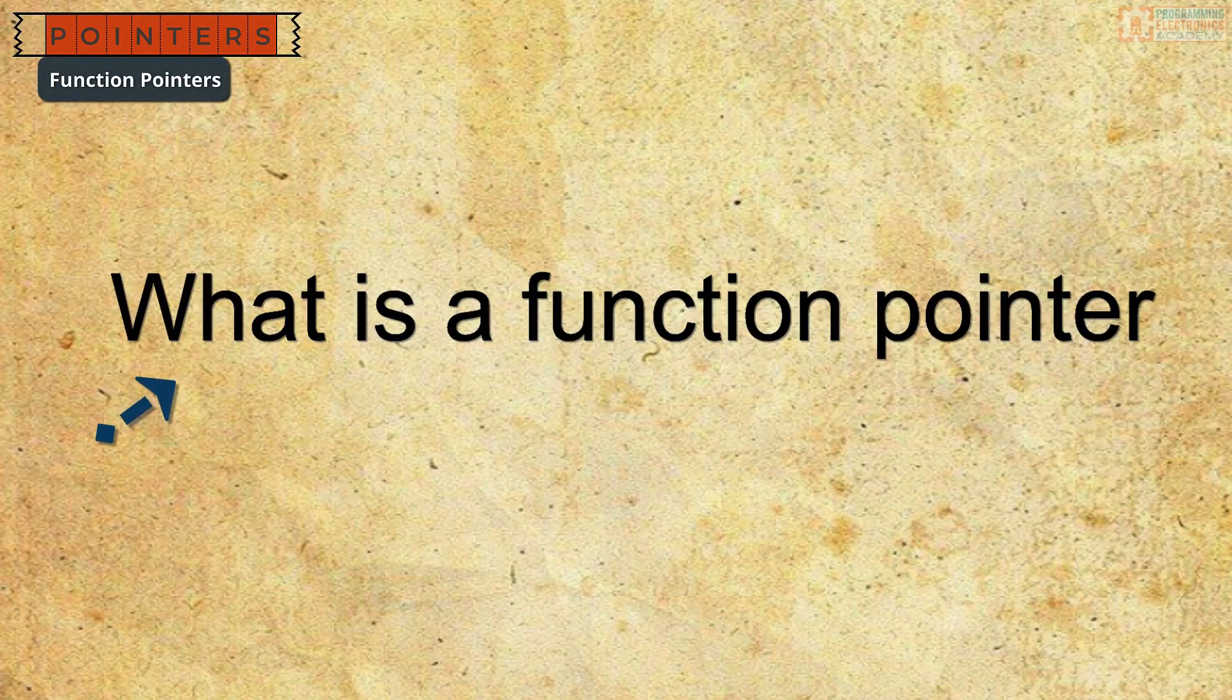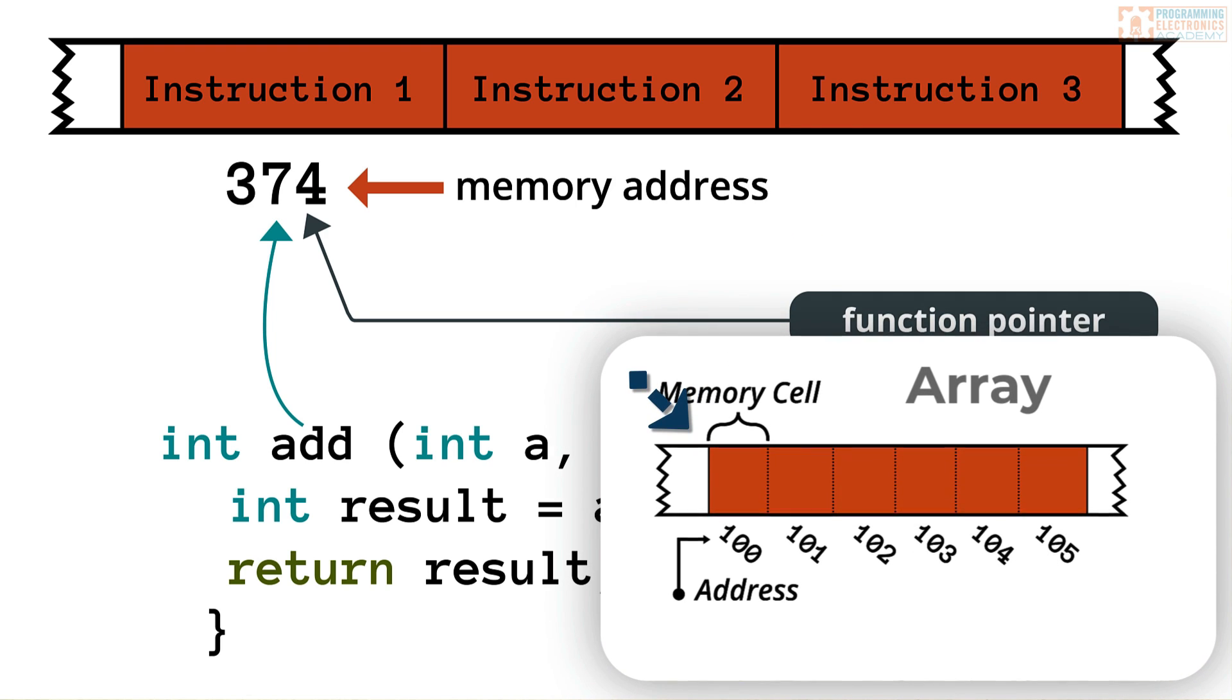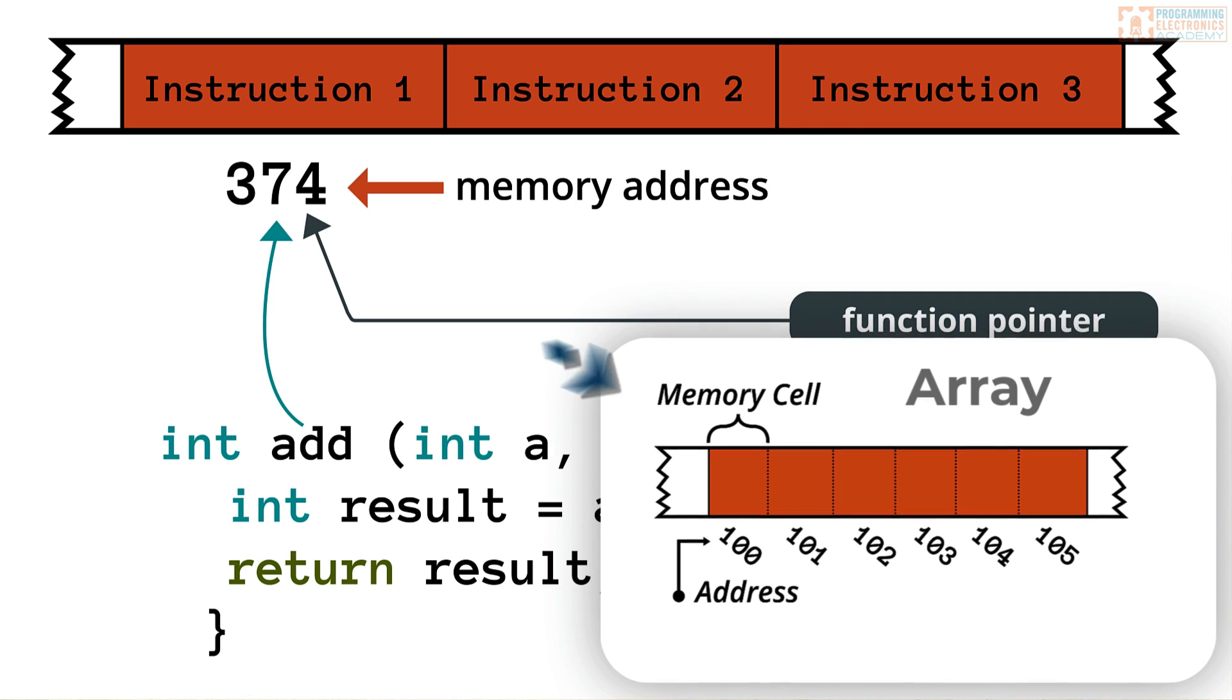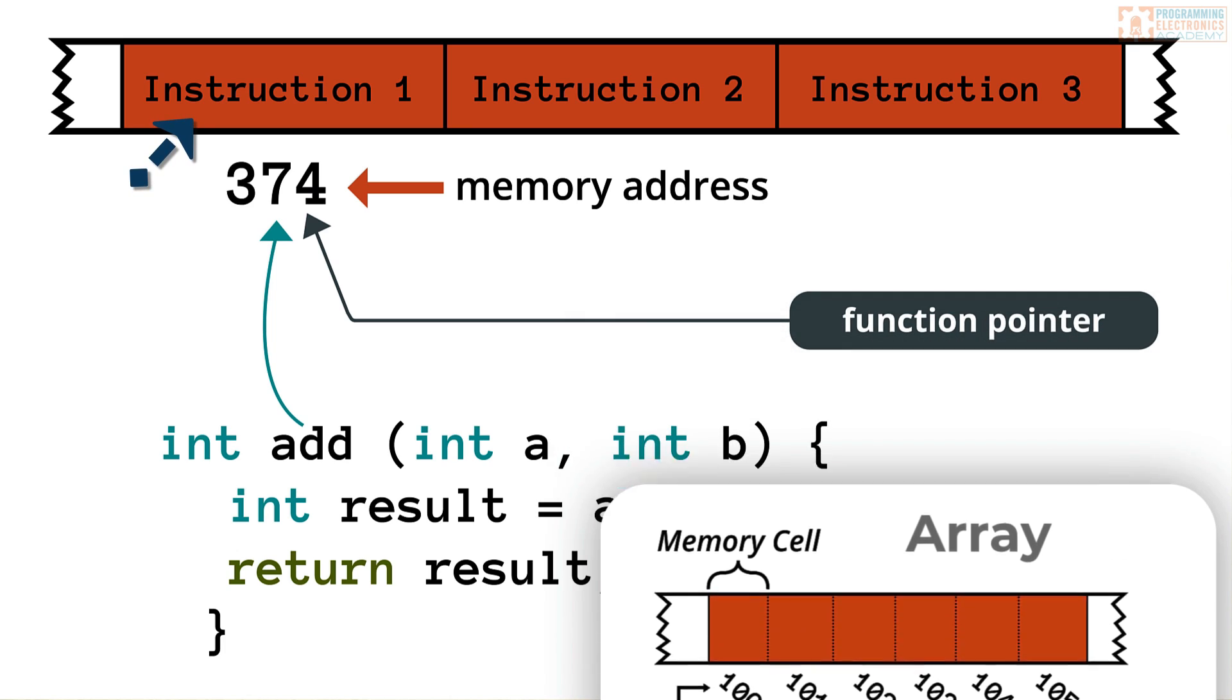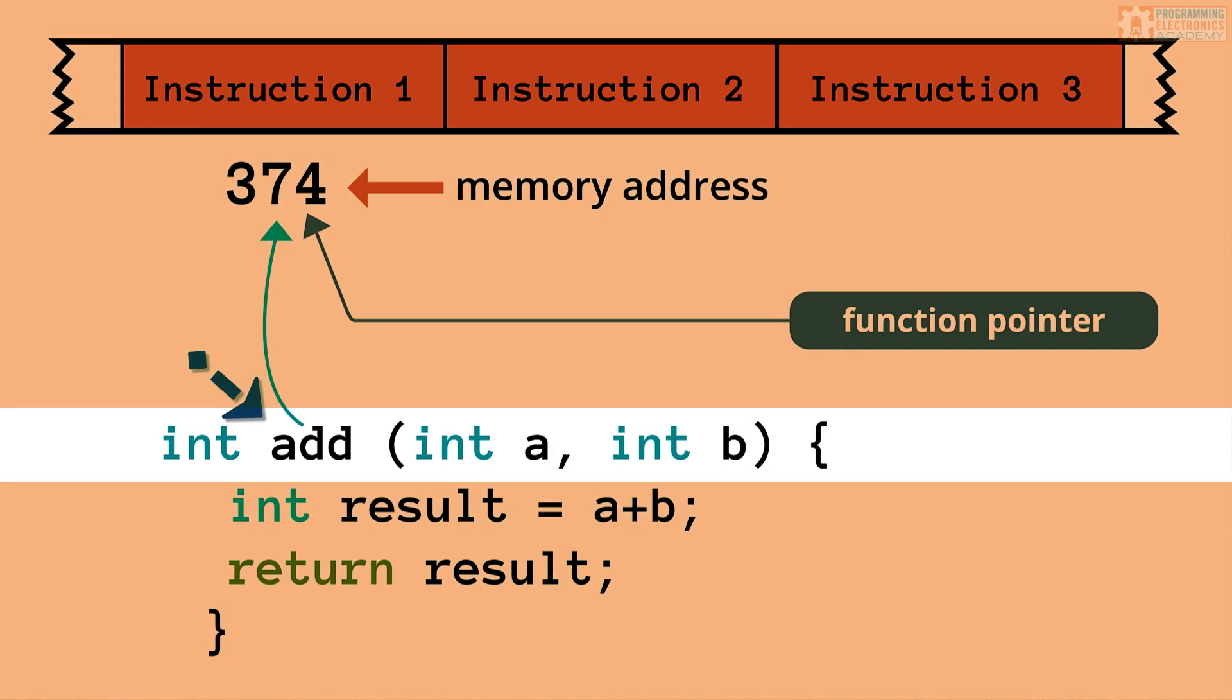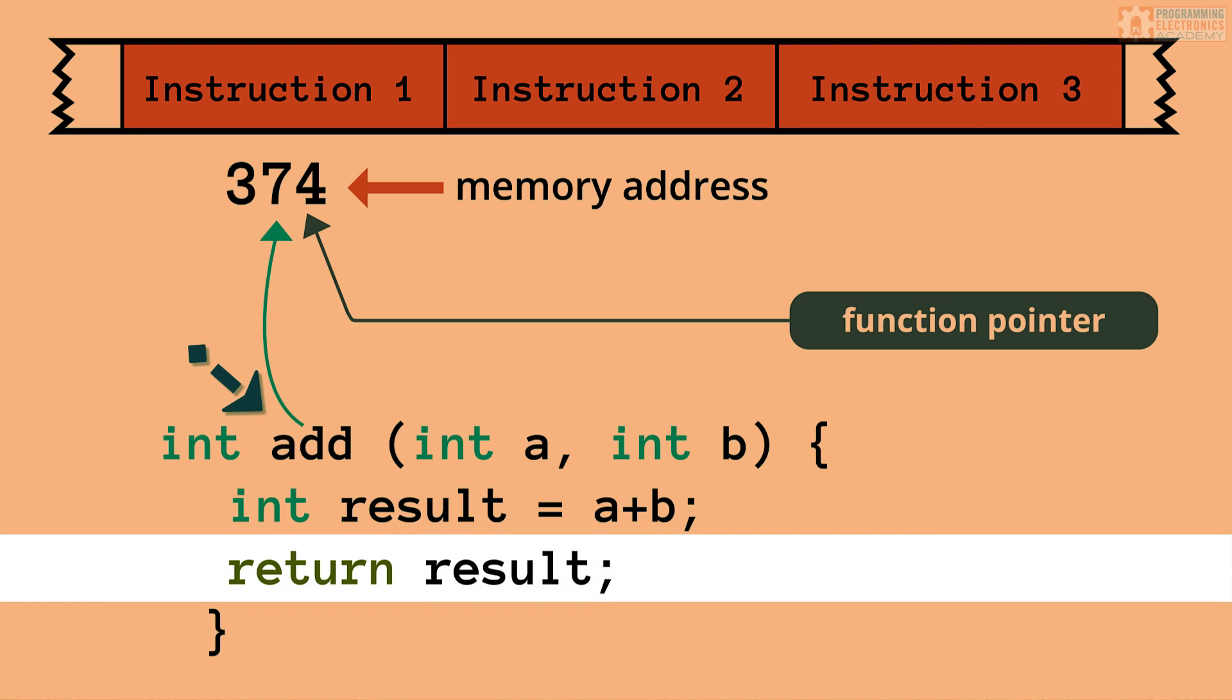All right, so what the heck is a function pointer? Well, a function pointer is just like the pointers that we've talked about so far, except that instead of pointing to the memory address of a variable, it points to the memory address where the instructions of a function are located. Consider this function called add. This add function takes two integers as arguments, adds them together, and returns the sum as an integer.